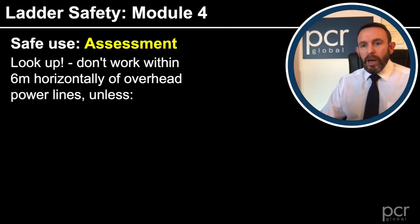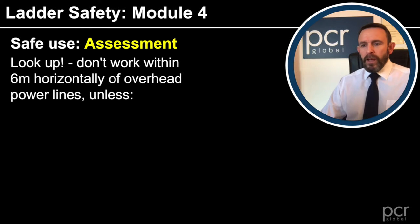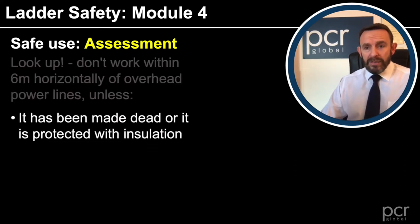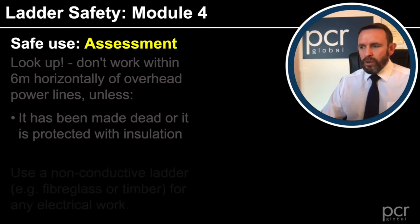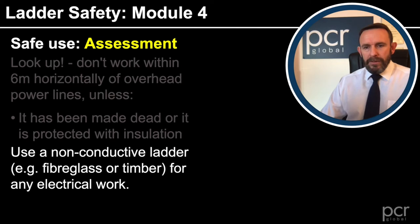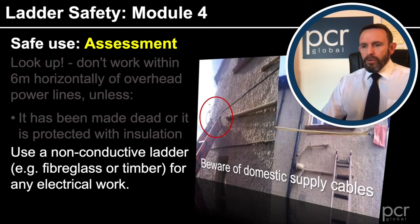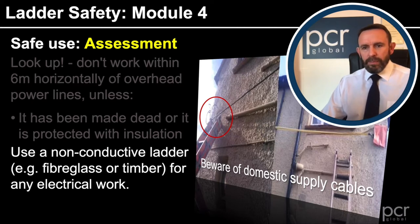Also during our assessment, look up. We should not be working within six metres horizontally of overhead power lines, unless they have been made dead or are protected with insulation. This is vitally important for the risk assessment. Any questions, go back to the supervisor or the person in charge of the work. In this situation, we're going to be using a non-conductive ladder — for example, fibreglass or timber. We should also be aware of any domestic supply cables, as can be seen in both photographs.